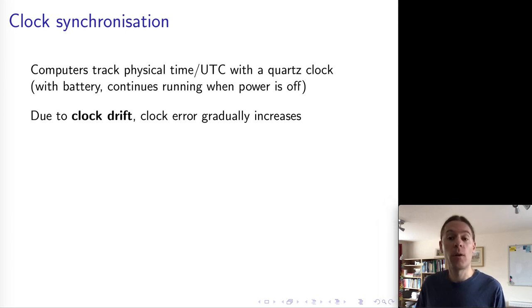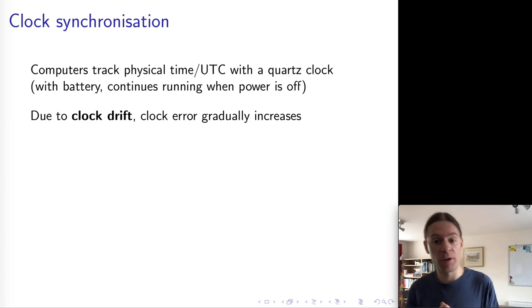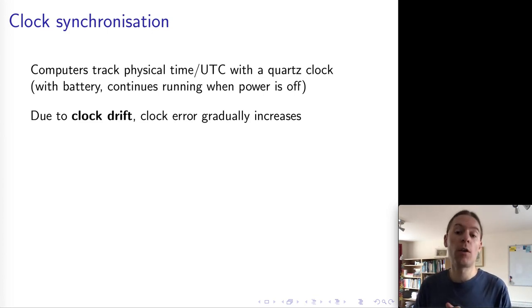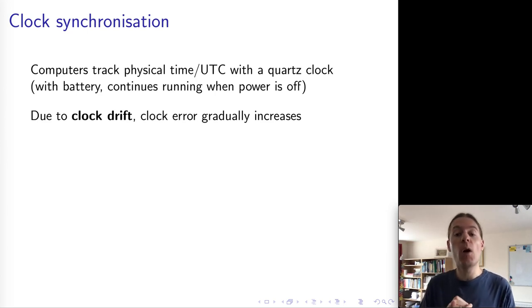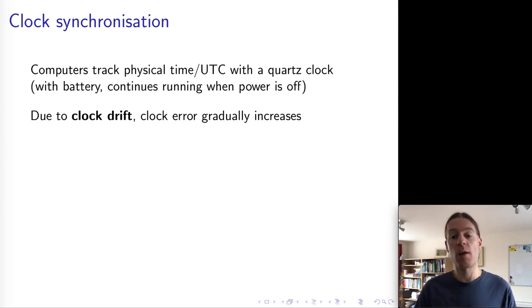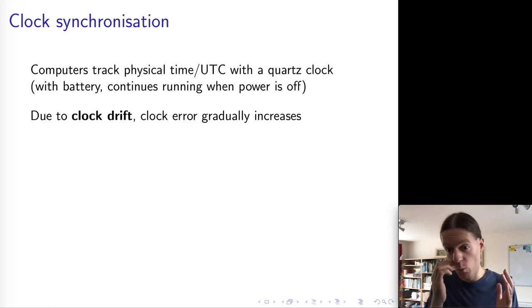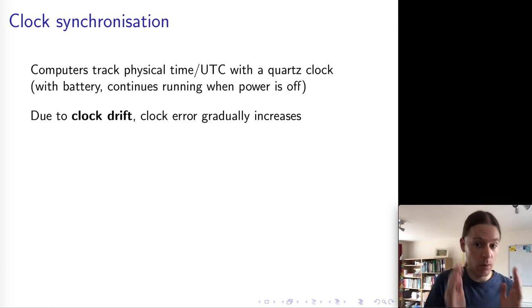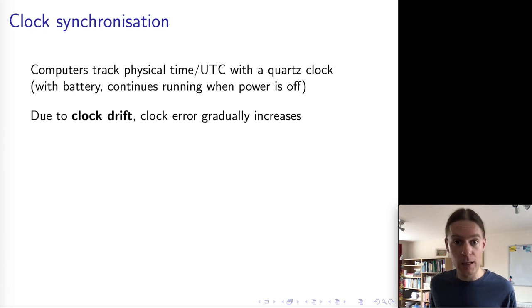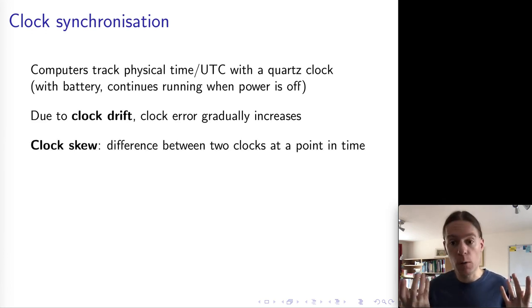Next we're going to talk about clock synchronization. Every computer pretty much contains a quartz clock, not an atomic clock because atomic clocks are too expensive and too bulky. So we need to make do with these less accurate quartz clocks and try to make them reasonably accurate. These quartz clocks will drift a little bit because their rate does not match up exactly with the correct clock tick rate, and we end up with clock skew.